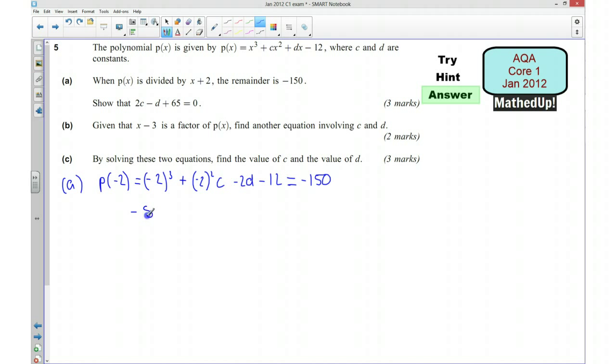So simplifying we'll have minus 8 plus 4c minus 2d minus 12 is equal to minus 150. And now minus 8 minus 12, so that's going to be negative 20. So I'm going to add 20 to both sides, so that's going to be 4c minus 2d is equal to negative 130. And I've just realized I wanted to make that equal to 0, so I'm going to add this 130 to both sides, so that's going to be 4c minus 2d plus 130 equals 0.